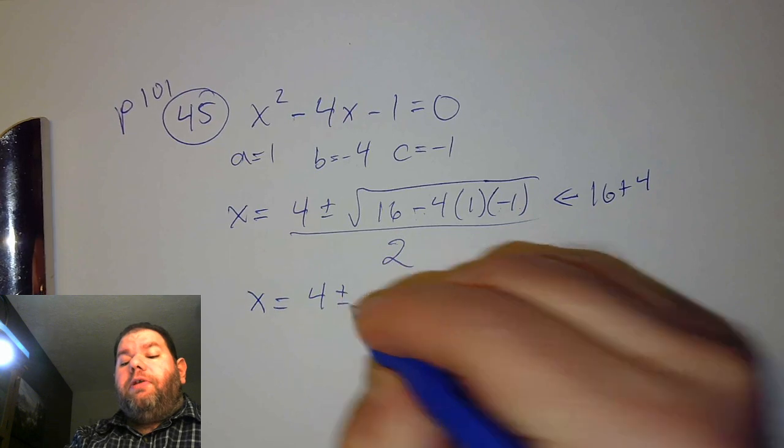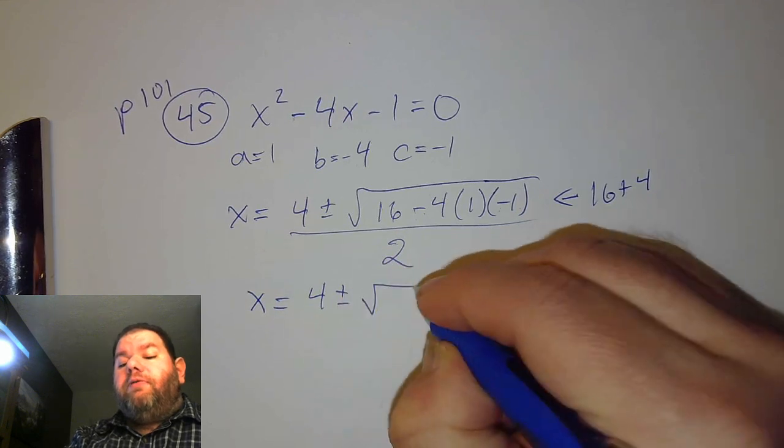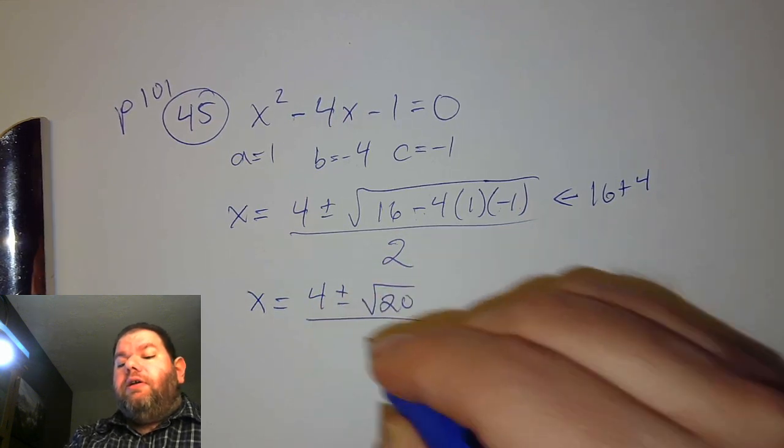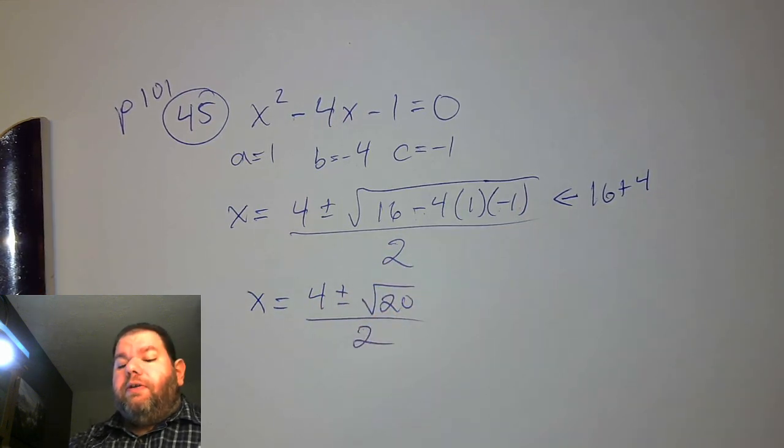We go ahead and combine that together, so we get 4 plus or minus the square root of 20, divided by 2.